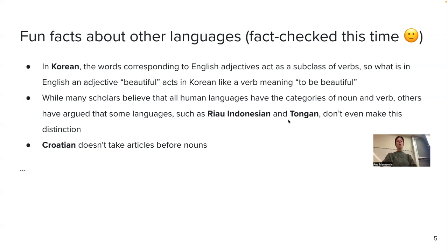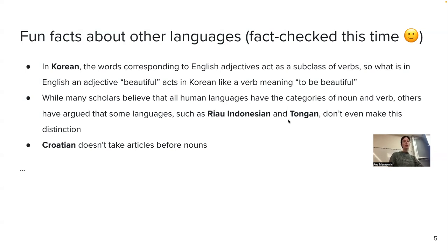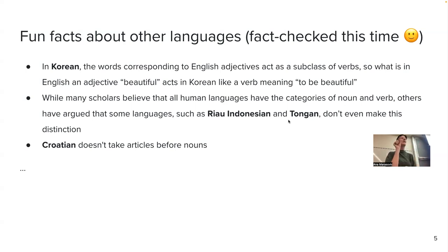Many scholars believe that all human languages have nouns and verbs, but some linguists believe certain languages — such as Tongan — don't even have this distinction between verbs and nouns. And as an example from my own language: Croatian doesn't have articles before nouns — we don't have 'the' or 'a' before the noun; we just don't have them. That's very challenging when writing in English, though thankfully there are writing tools now.